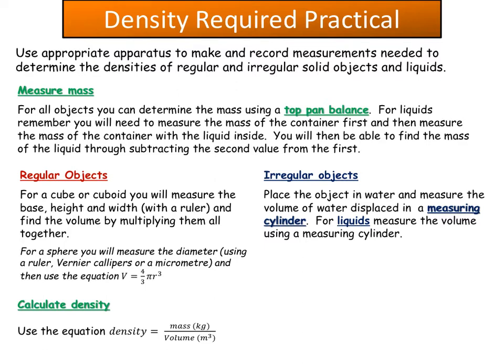For irregular objects and liquids, you can't calculate the volume directly, so you work it out a different way. You place the object in water and measure the volume of water displaced. All objects displace their own volume in water when fully submerged, so a measuring cylinder is used to collect the displaced water and give the volume. Now that you have volume and mass, you can calculate density using density equals mass divided by volume.